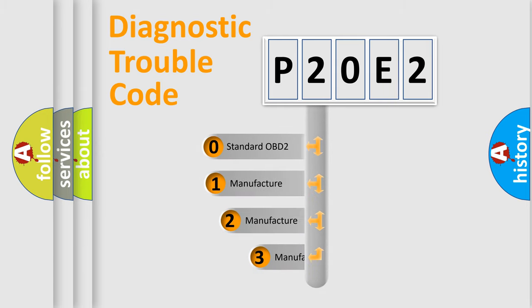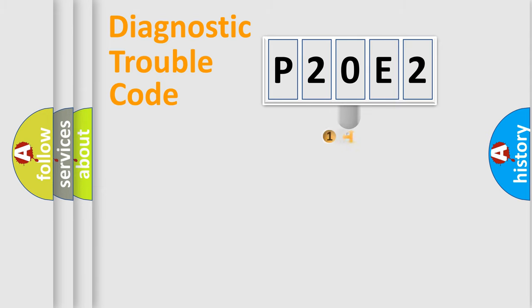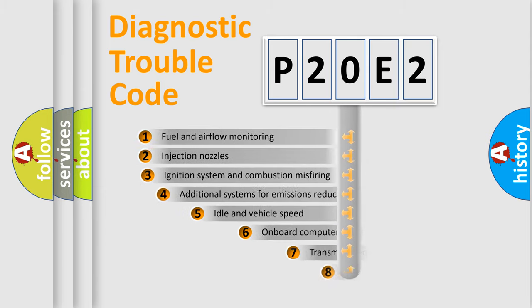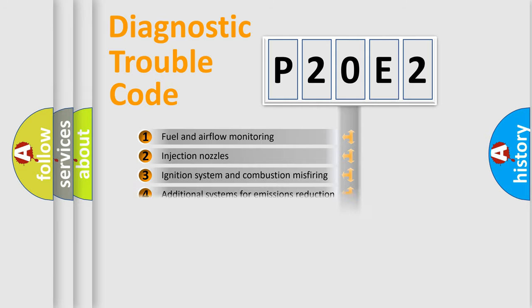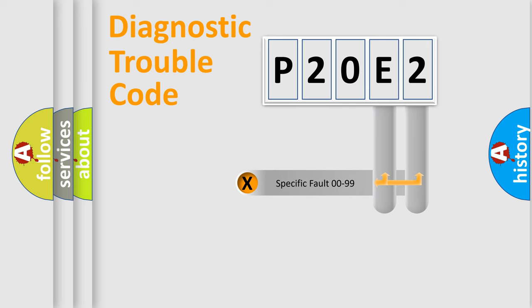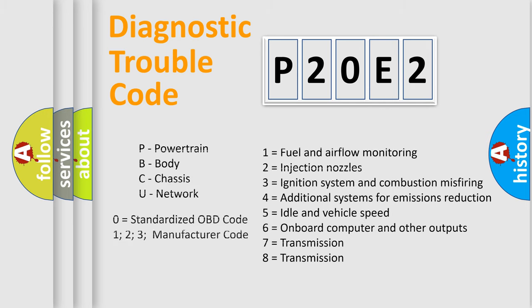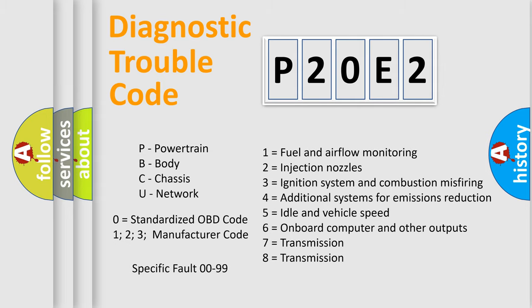If the second character is expressed as zero, it is a standardized error. In the case of numbers 1, 2, or 3, it is a more prestigious expression of the car-specific error. The third character specifies a subset of errors. The distribution shown is valid only for the standardized DTC code. Only the last two characters define the specific fault of the group. Let's not forget that such a division is valid only if the other character code is expressed by the number zero.